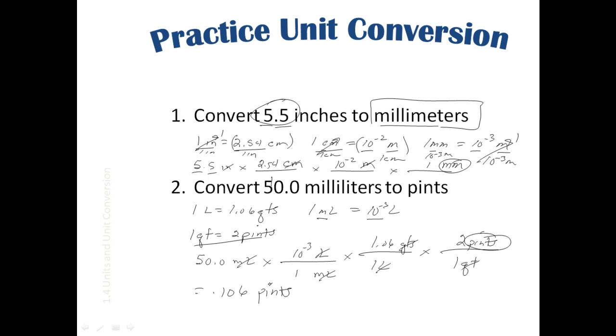On the calculator: 50 times 10 to the negative 3 times 1.06 times 2 equals 0.106 pints. This has three significant figures. In scientific notation, the answer is 1.06 times 10 to the negative 1 pints.